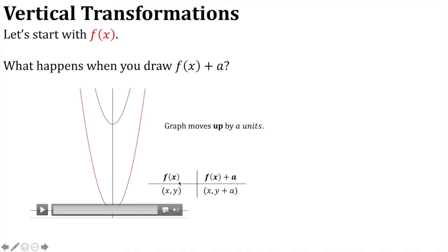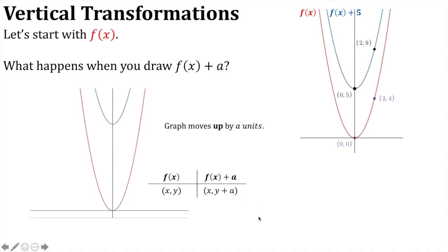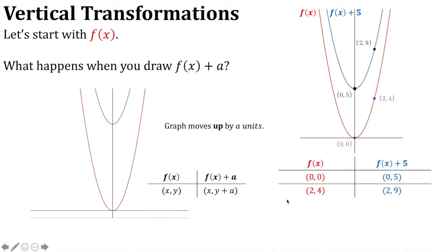If we had a point on f of x which was (x, y), that point transforms to (x, y + a). Looking at a specialised example: if we had f of x and then f of x plus 5, on the graph of f of x we have two points — (0, 0) and (2, 4). Adding 5 to both y-coordinates, we get (0, 5) and (2, 9).